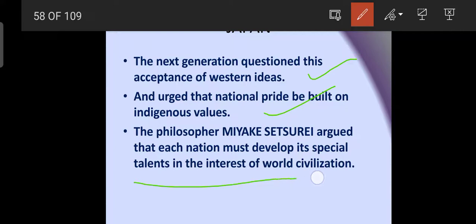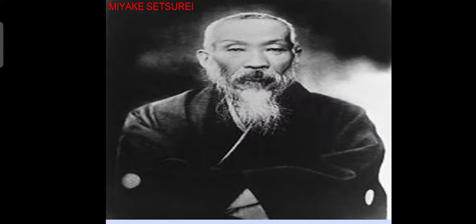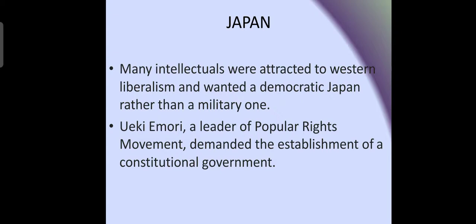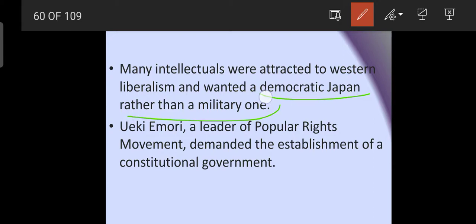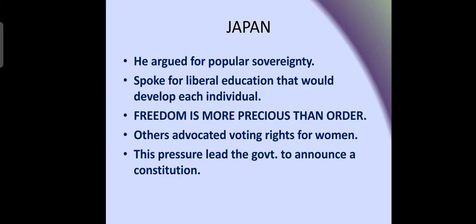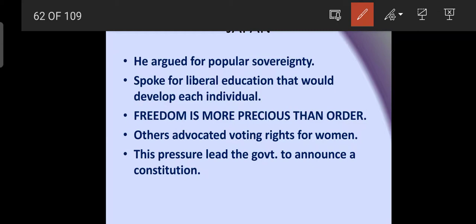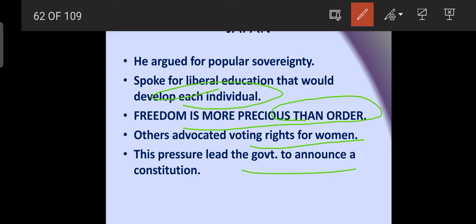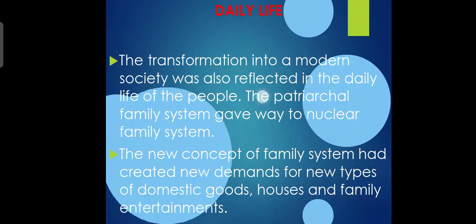The next generation questioned acceptance of Western ideas. Arguments arose over national pride, as indigenous values were being lost. Philosopher Miyake Setsurei argued that each nation must develop its special talent in the interest of world civilization. Many intellectuals were also attracted to Western liberalism and wanted a democratic Japan rather than a military one. Yukio Mori, a leader of the popular rights movement, demanded the establishment of constitutional government. He argued for popular sovereignty and liberal education, saying freedom is more precious than order. Others advocated voting rights for women, leading the government to announce a new constitution granting equality.